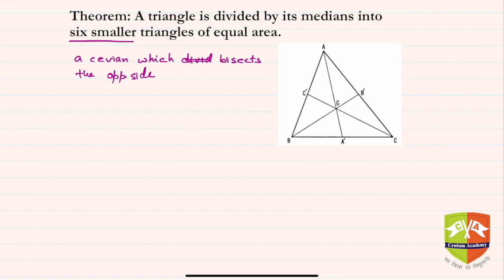If you can see, there are six parts of this triangle formed by the medians. Let me name them first. Let us say this triangle is alpha, this is beta, gamma, delta, epsilon, and sigma. I am just labeling all these six areas.